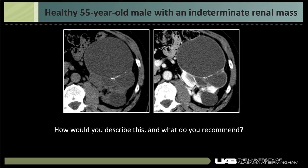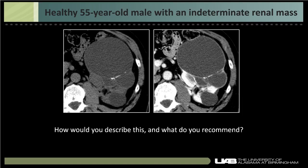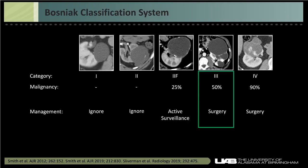Returning to our case — the 55-year-old healthy male with an indeterminate renal mass. Confirming it's cystic, and noting that what appears to be two adjacent cysts is best treated as one cystic mass with septations, measurement shows enhancement from 37 to 105 Hounsfield units. There are no nodular components, so this is a Bosniak 3 cystic renal mass with a 50% chance of malignancy. If you told a patient there's a 50-50 chance it's malignant and no other test can determine this, they'd naturally want it removed. But there's more to the story.